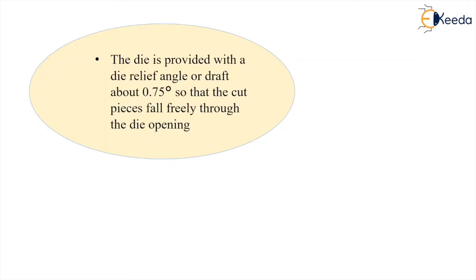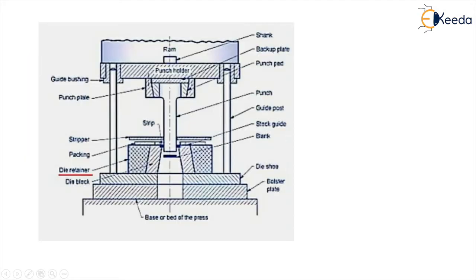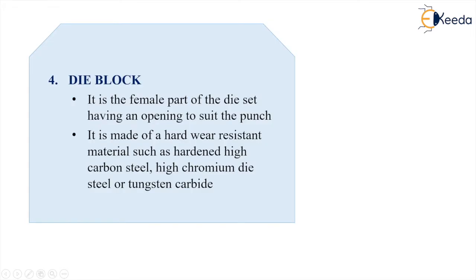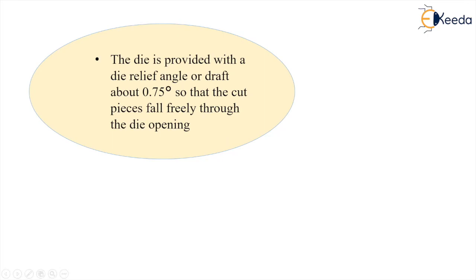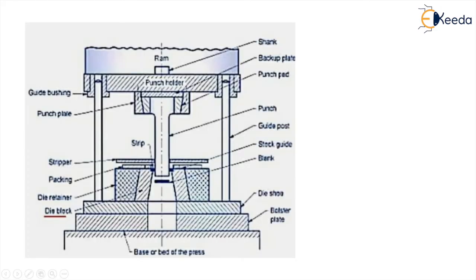The die block is the female part of the die set, having an opening to suit the punch. It is made of hard, wear-resistant material such as hardened high-carbon steel, high-chromium die steel, or tungsten carbide. Since the punch travels on the die block, it must be wear-resistant. The die piece is provided with a die relief angle or draft of about 0.75 degrees so that cut pieces fall freely through the die opening.